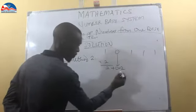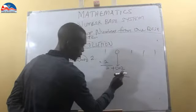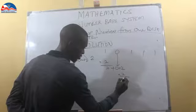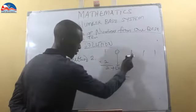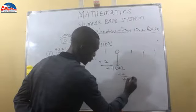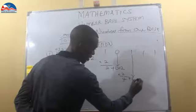Now 2 times 2 gives us 4. 4 plus the next number, 4 plus 1, gives us equal to 5.